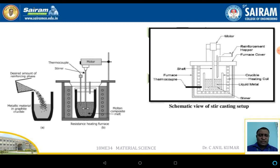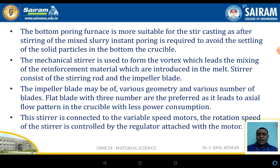The stirrer is normally a graphite stirrer. A bottom pouring furnace is more suitable for stir casting, as stirring and mixing using the stirrer instead of pouring helps avoid settling of the solid particles, which is the reinforcement.